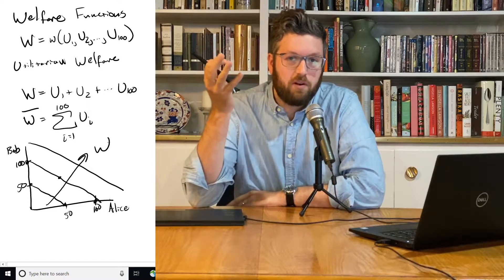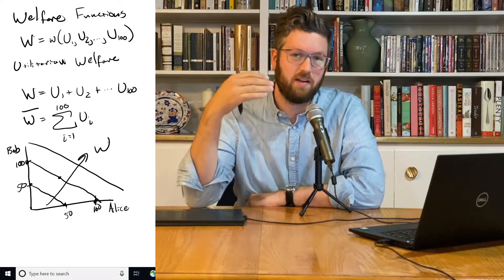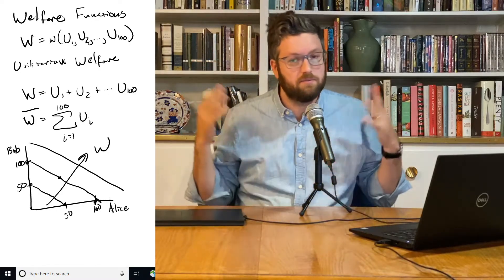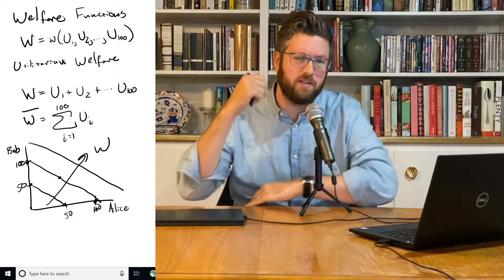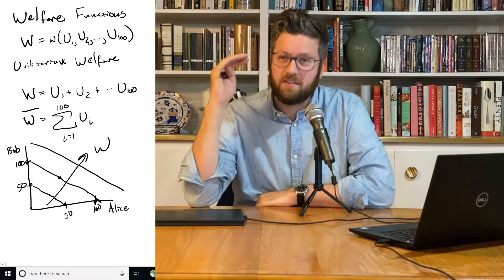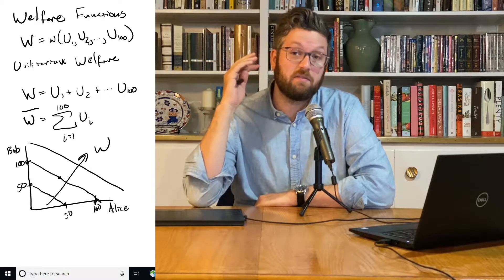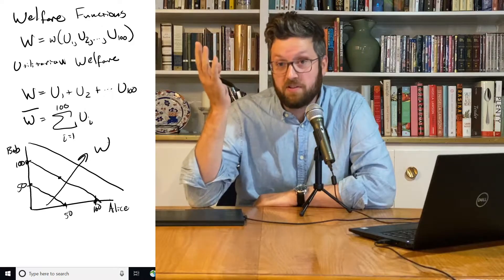The utilitarian framework is simple, makes sense, and it's intuitively plausible. If more people are happy, that's a desirable way to organize society. But you can see in this graph that the way that this challenges our moral intuitions about a good way to run society is that it's very open to massive inequality.